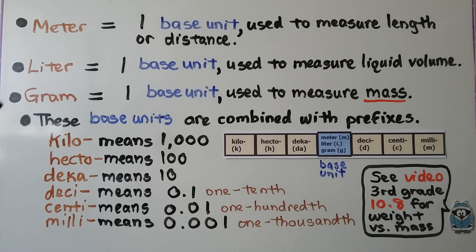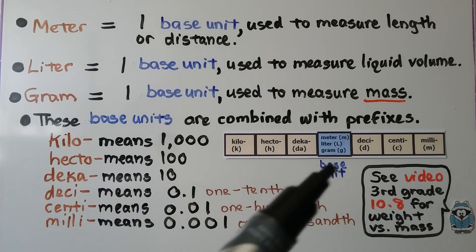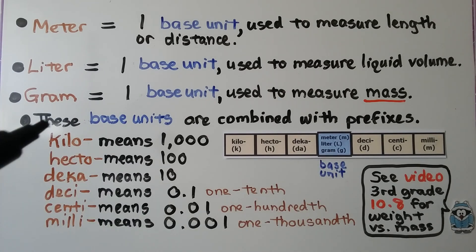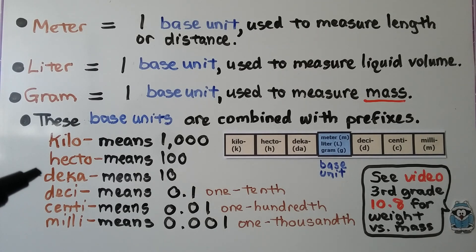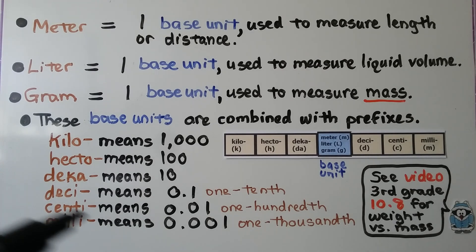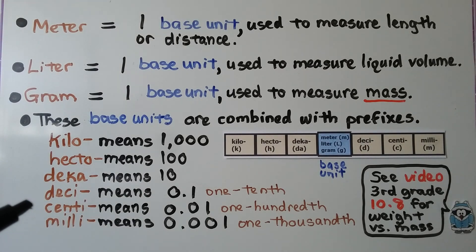These base units — meter, liter, gram — are combined with prefixes. We have kilo, which means 1,000. Hecto, which means 100. Deca, which means 10. Deci, which means 1 tenth. Centi, which means 1 hundredth. And milli, which means 1 thousandth.